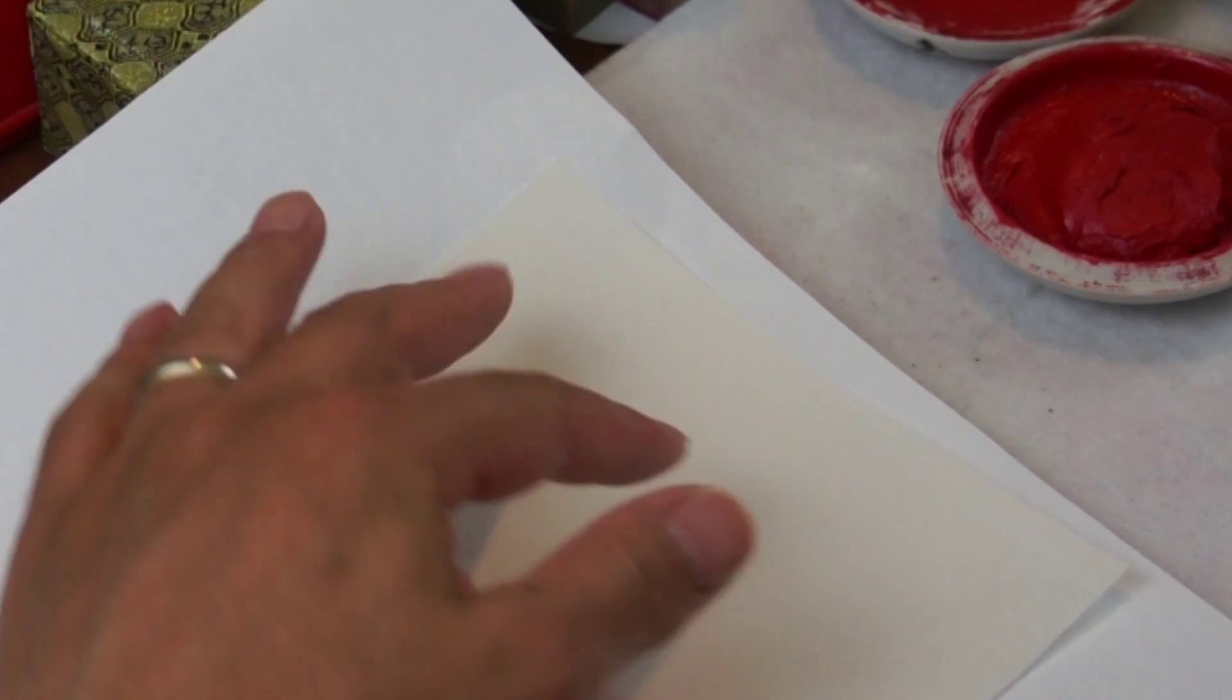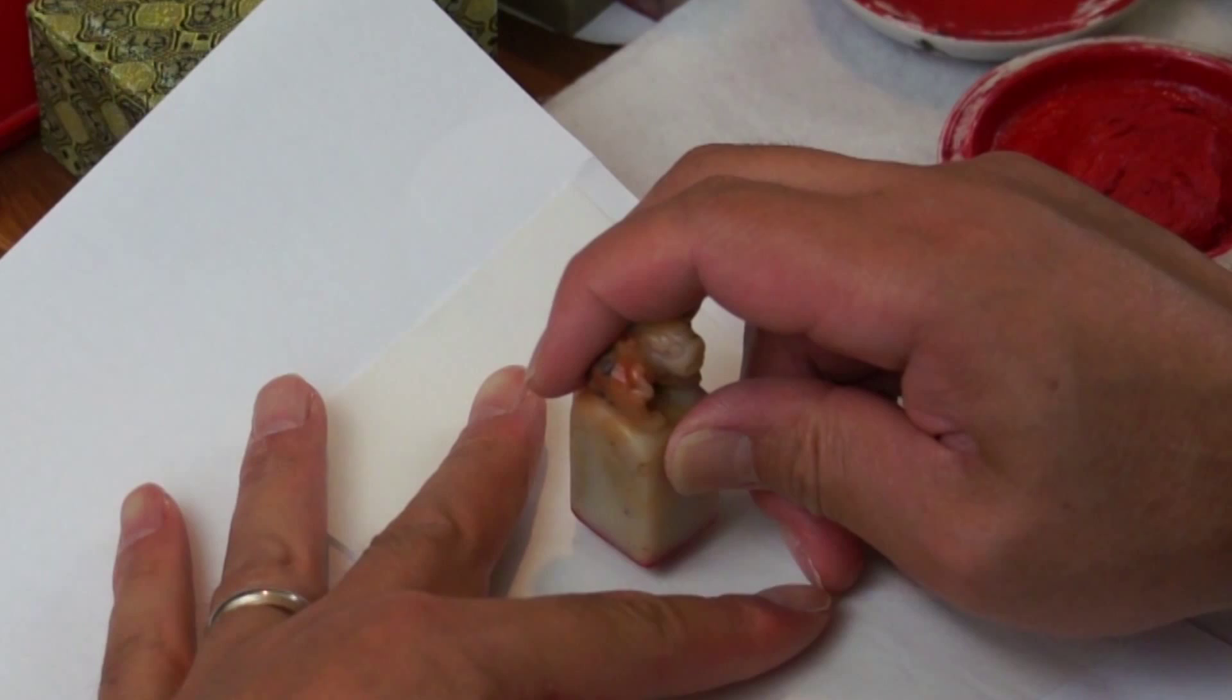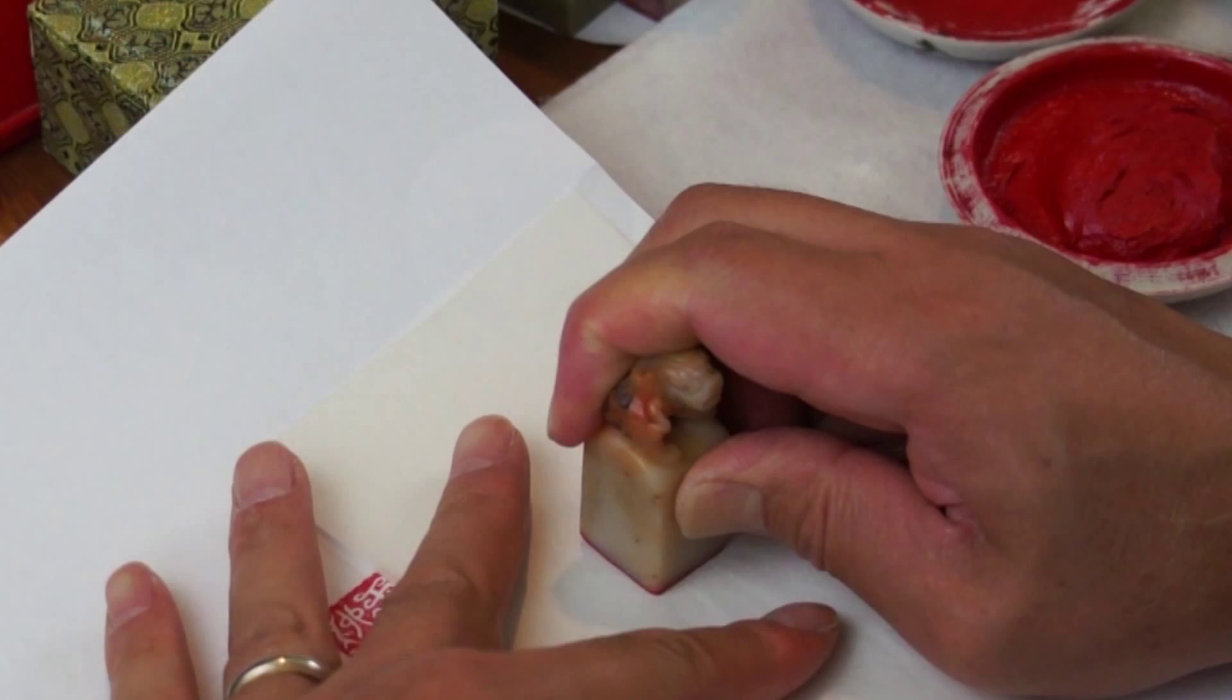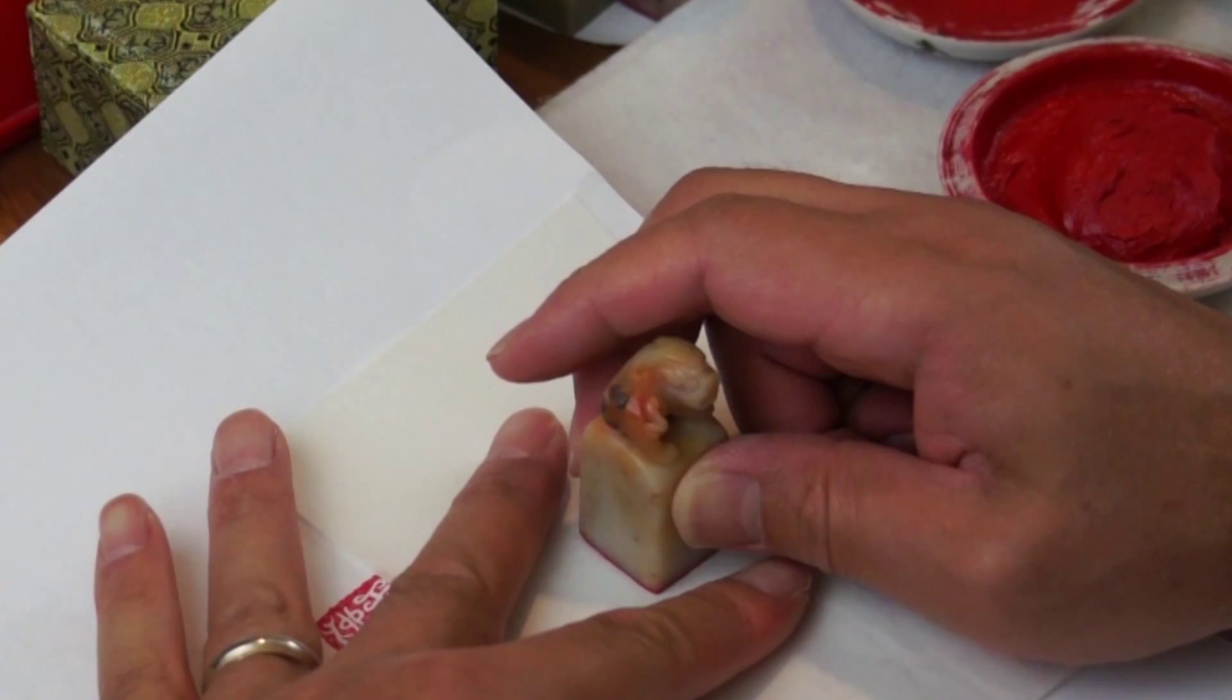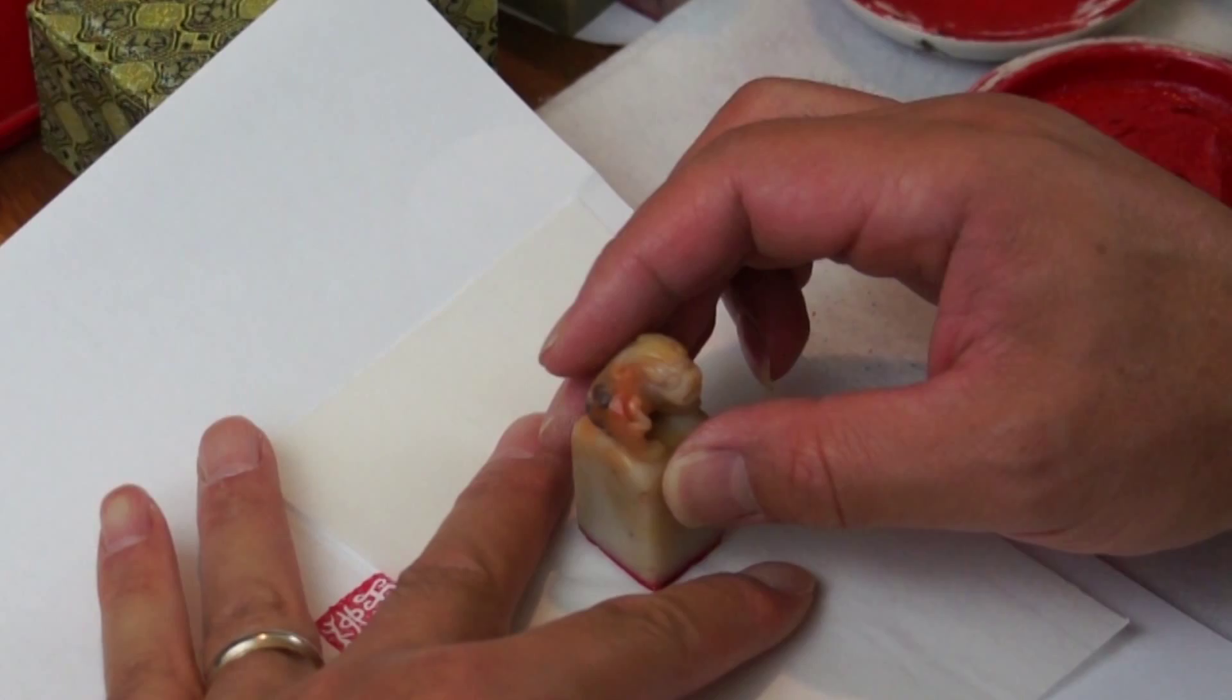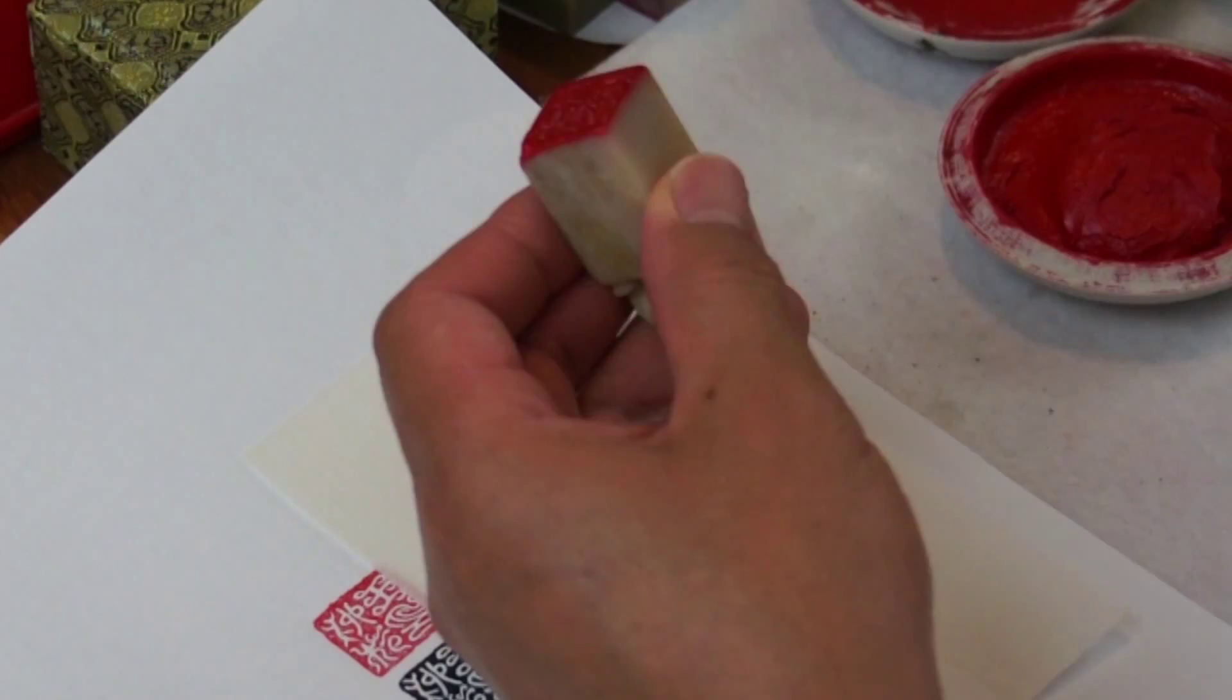Hold the stone straight and place gently and press evenly. Lift straight up with the left hand holding the paper. That's a perfect imprint. Okay, I will put my signature on the left side. You can also use that as a hint for orientation.